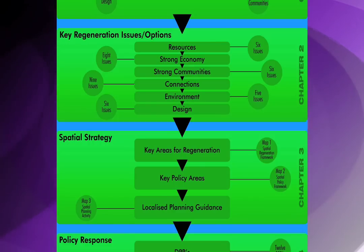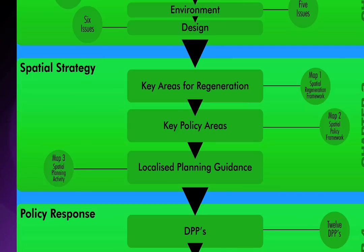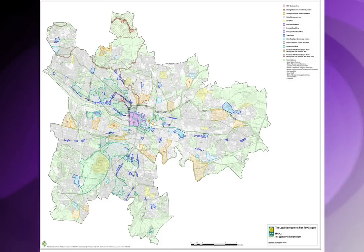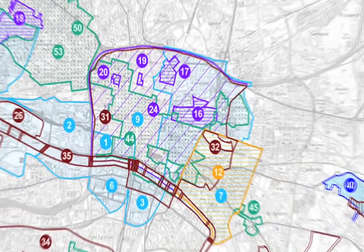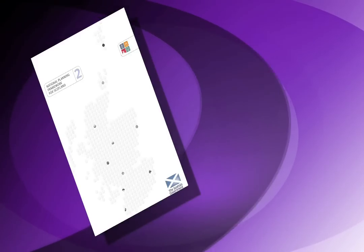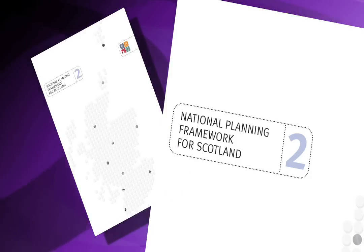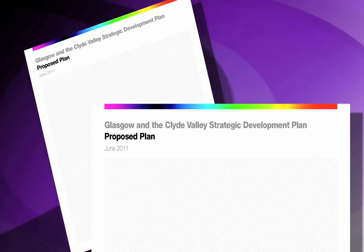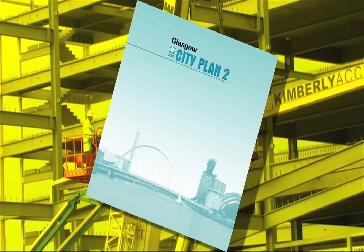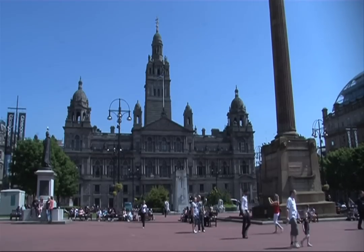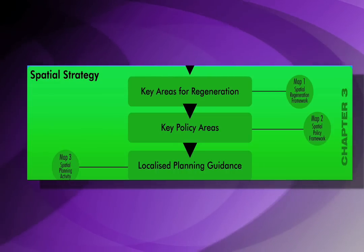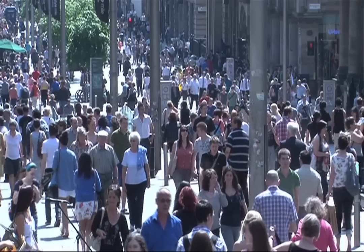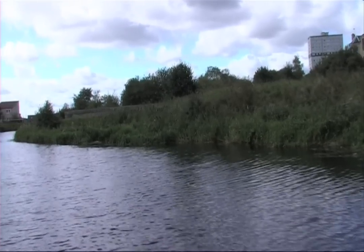The main issues are accompanied by a preferred spatial strategy which sets out on three maps the key spatial elements which the council considers should form the basis of the new plan, as well as those elements emerging from consideration of the main issues. These include proposals identified in the National Planning Framework and the Strategic Development Plan being prepared for the Glasgow Conurbation, and City Plan 2 proposals and policies which the council considers should be retained. The preferred spatial strategy can be described as one of renewal and regeneration, but with an enhanced emphasis on sustainable development, health, addressing climate change and placemaking.